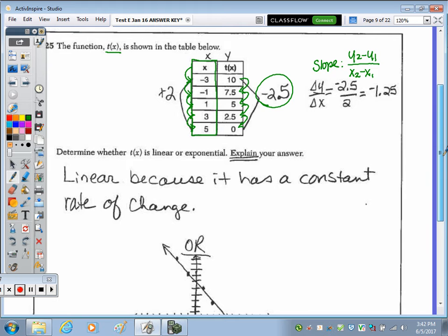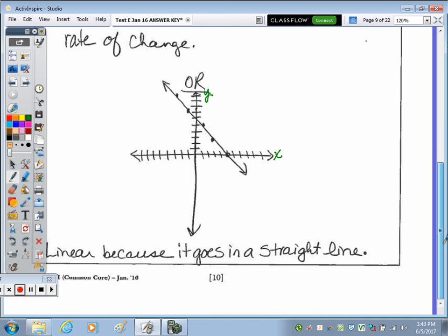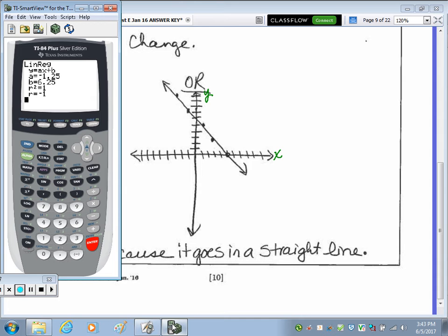You can also take and graph it. I'm going to make sure we label our X and Y axes. When you plot the points, you see we connect with a straight line. And lastly, you can also go to your calculator, enter the information into the table, and then calculate a linear regression as well as an exponential. When you calculate the linear regression, you can see that our R value is negative 1. So that means it is a straight line.